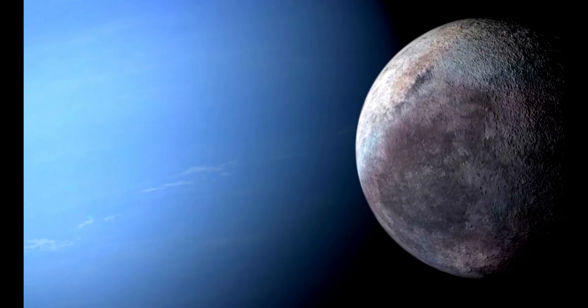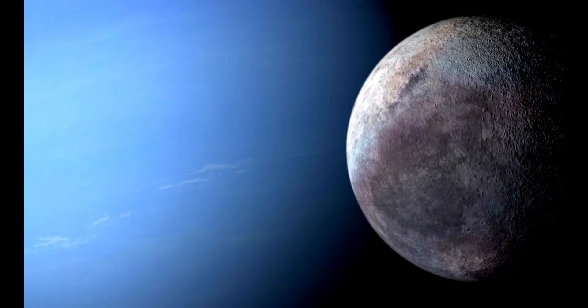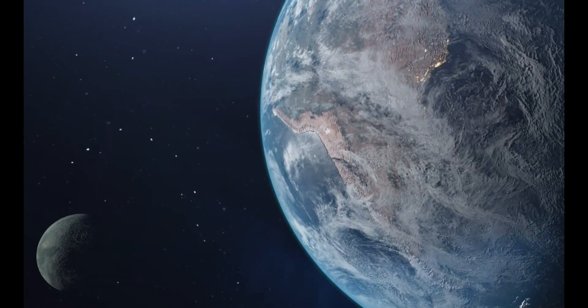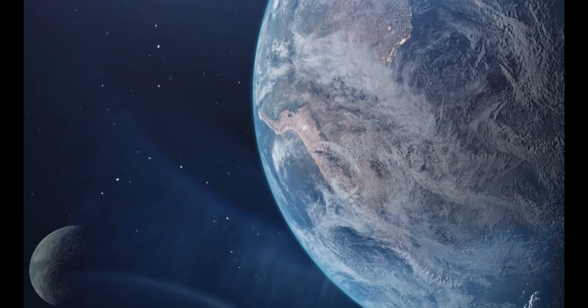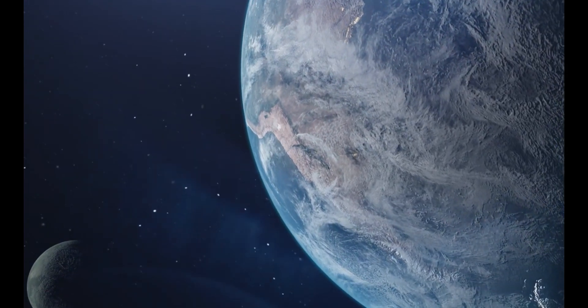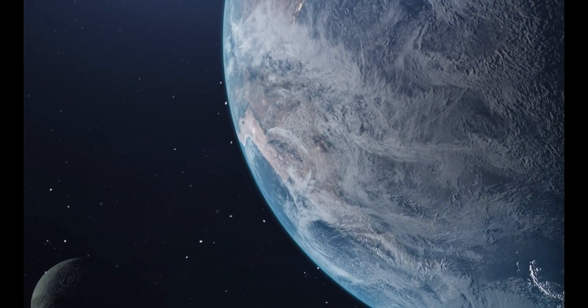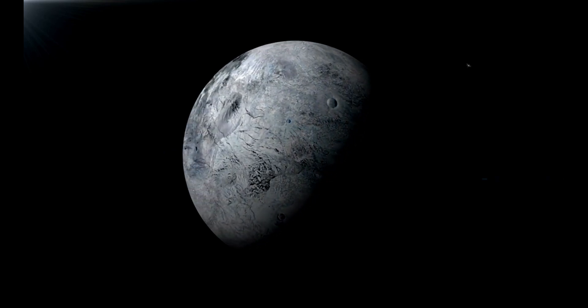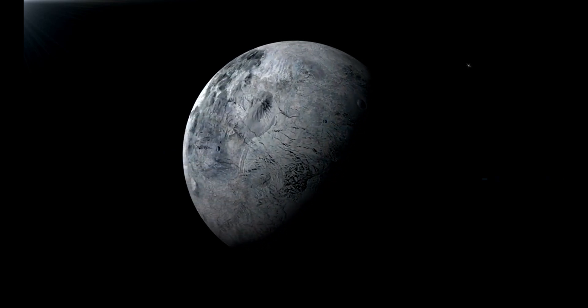Proxima b was first discovered in 2016 using the radial velocity method, which detects planets by measuring the slight wobble of their parent stars caused by the gravitational pull of orbiting planets. Proxima Centauri, the star Proxima b orbits, is a red dwarf located about 4.24 light-years from Earth, making it the closest known exoplanetary system.